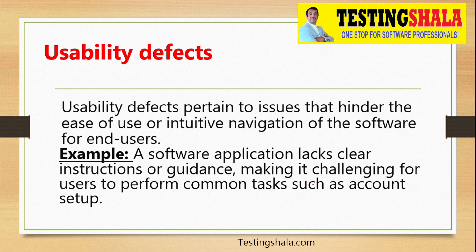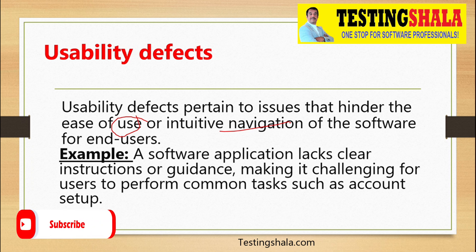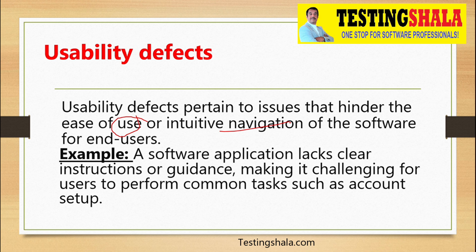The next type is usability defects, which focus on the ease of use and navigation of the application for the end user. If the usability or user interface is not handled properly, those issues are logged under the usability defect classification. For example, if a software application lacks clear instructions or guidance — such as how to create an account or the steps involved — those defects are logged under usability defects.